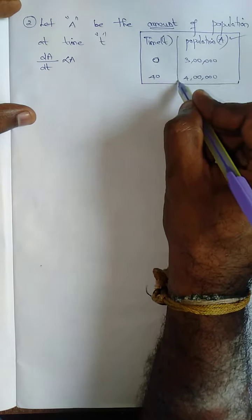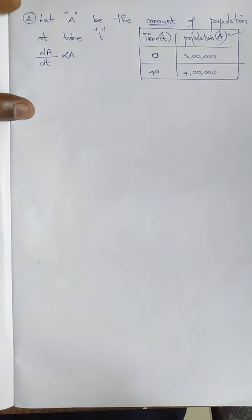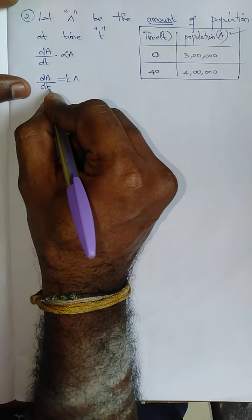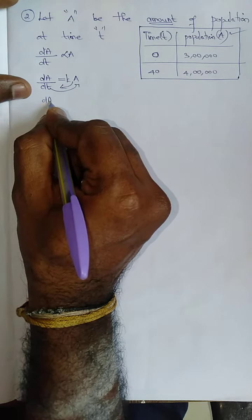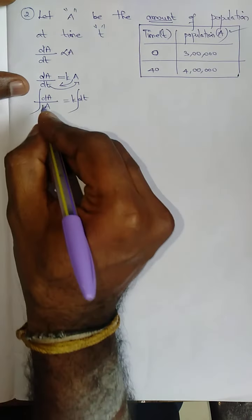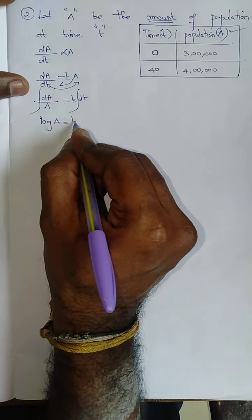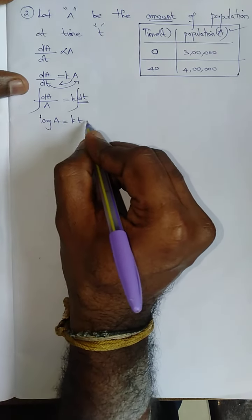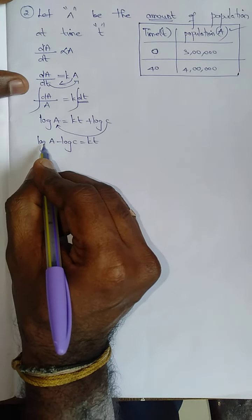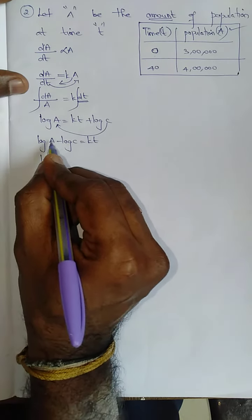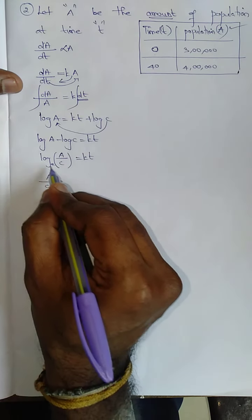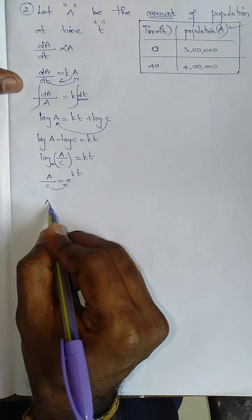Very easy sum. dA/dt — remove the proportionality symbol and use k as the proportionality constant — so dA/dt = kA. Rearranging, dA/A = k dt. Integrating on both sides, the integral of dA/A is log A, equal to kt plus a constant log C. So log A minus log C = kt, which gives log(A/C) = kt.